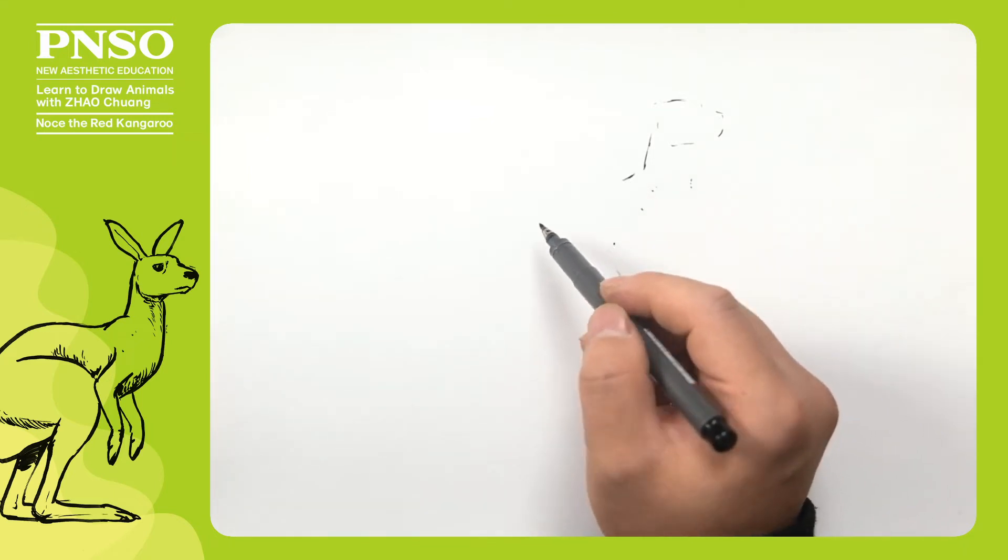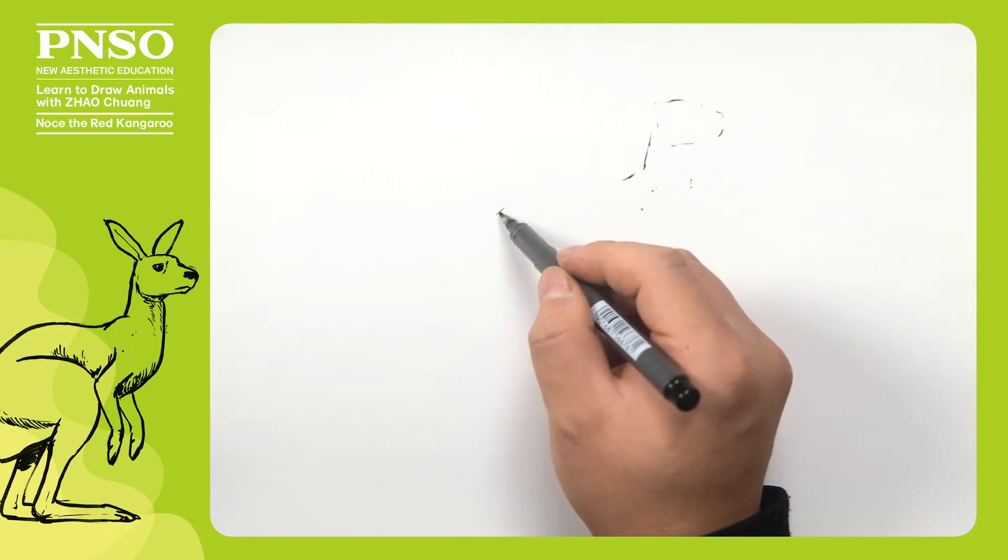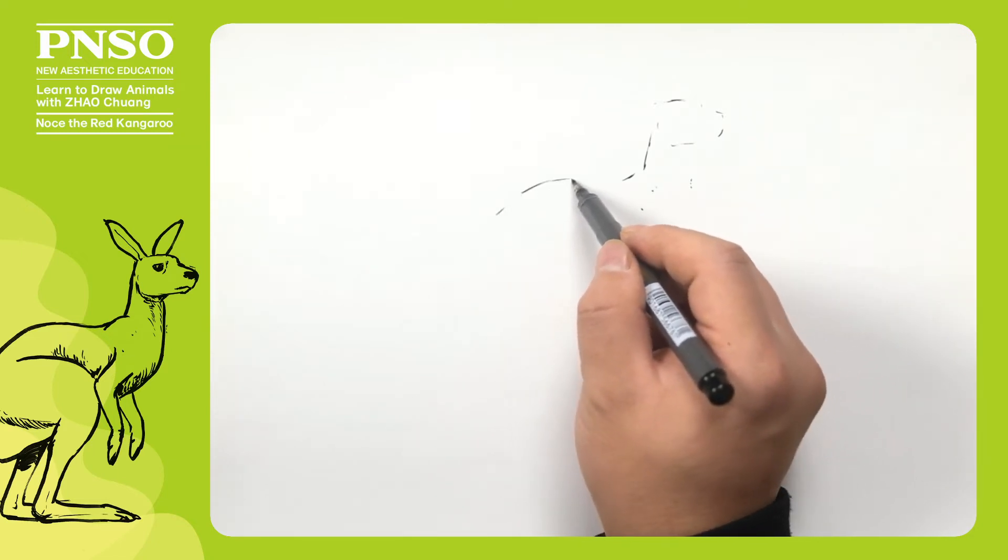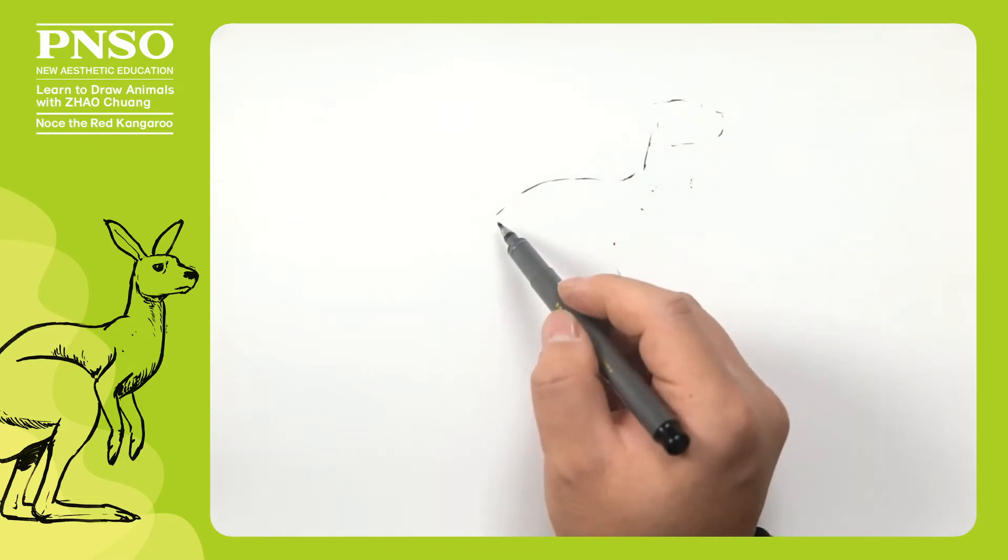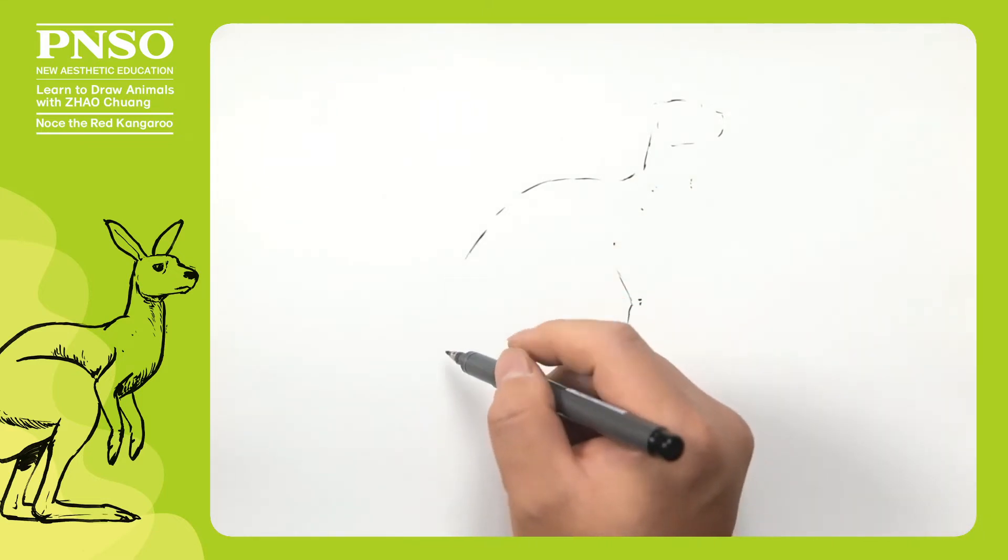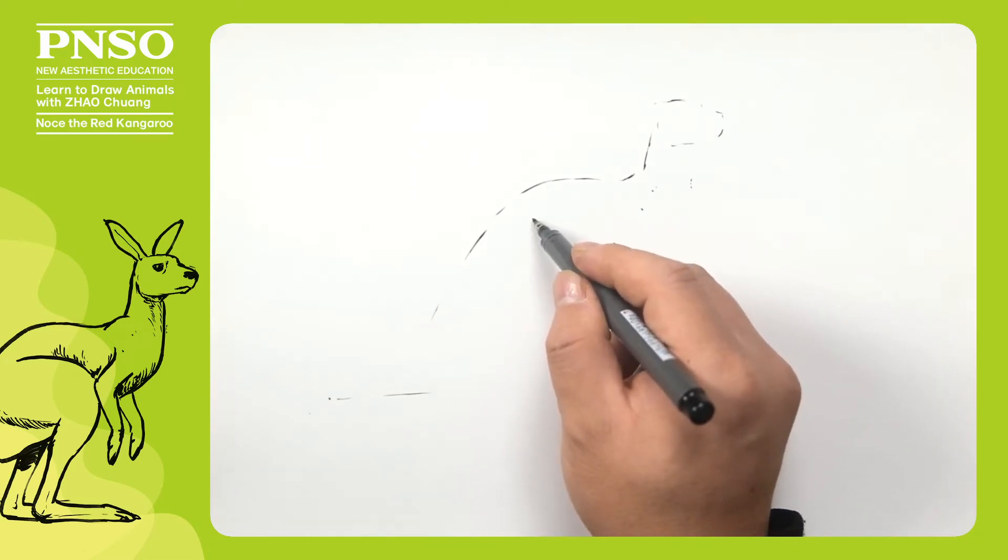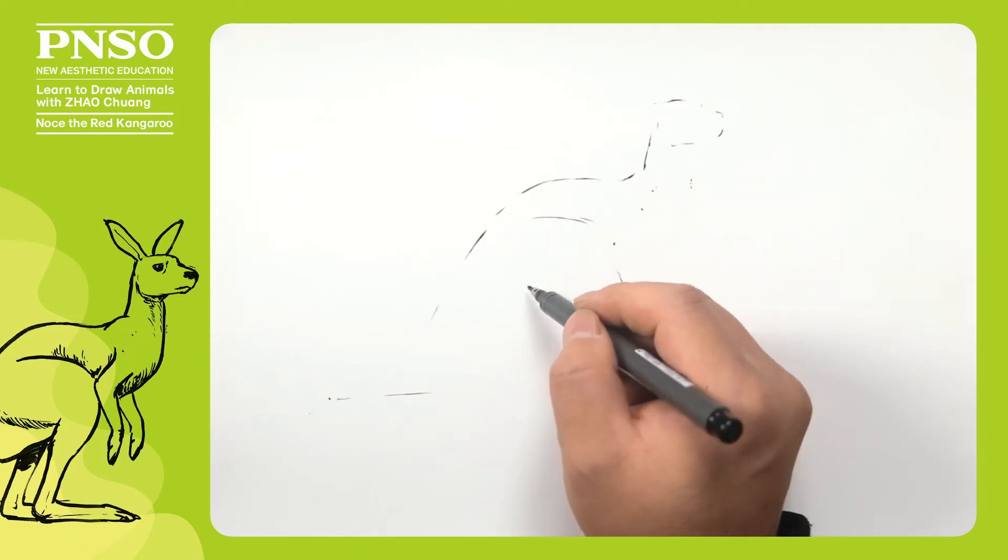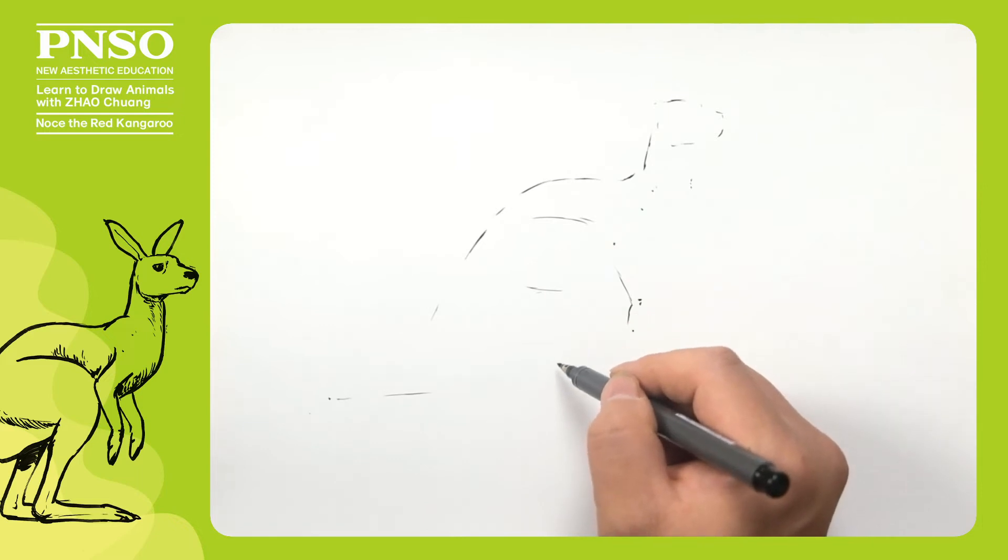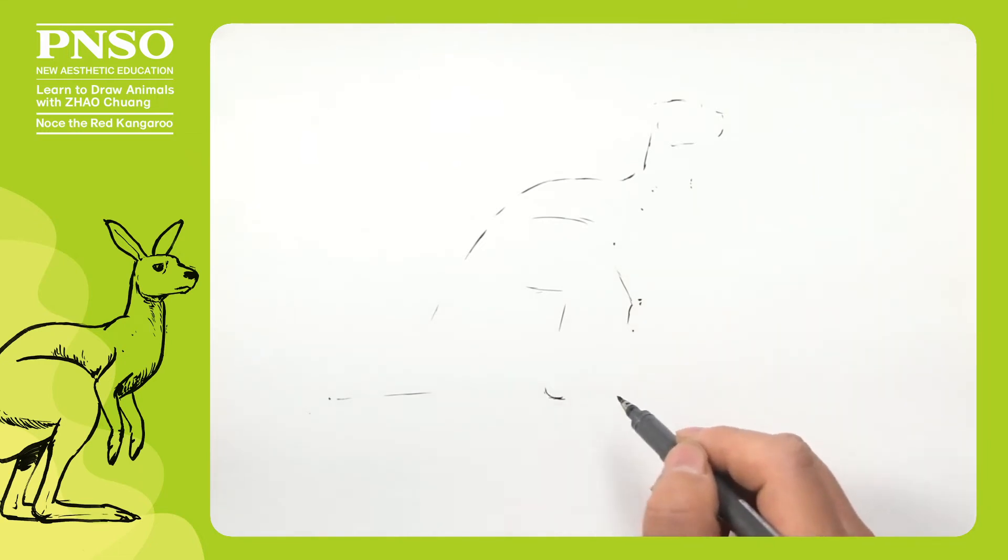Next, let's draw the shape of its back. When the red kangaroo stands, it uses its tail to support its weight, therefore, its back bends. We need to draw its tail backward and end it here. It has thick and strong thighs and long shanks. Its ankles, like human heels, touch the ground. When it rests, they touch the ground, but when it jumps, they move down.